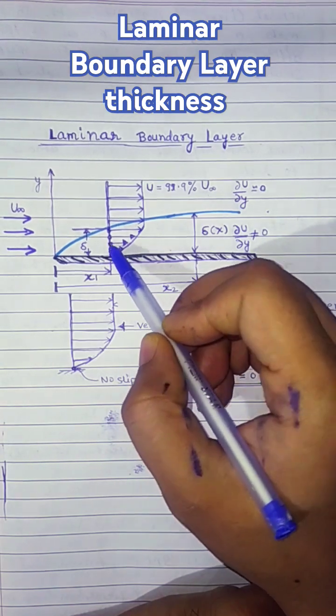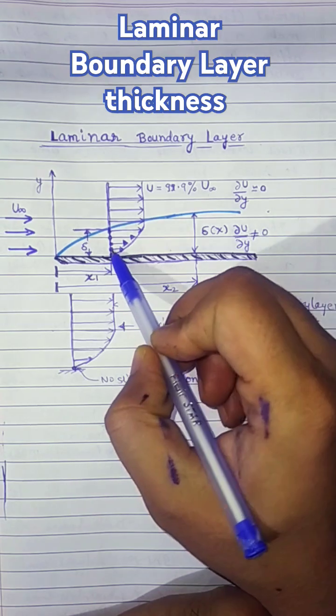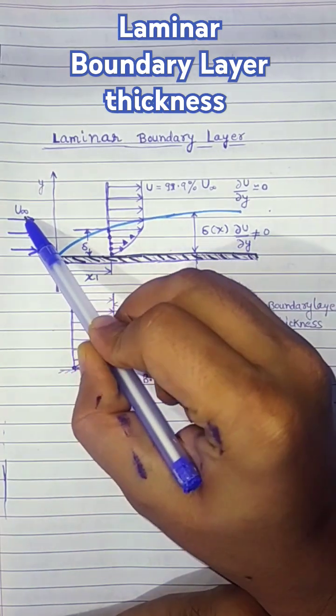In this way, different particles as we move away from the wall will have higher velocity compared to the previous particle, but they are lesser compared to u-infinity.